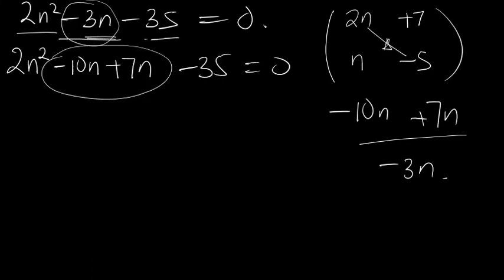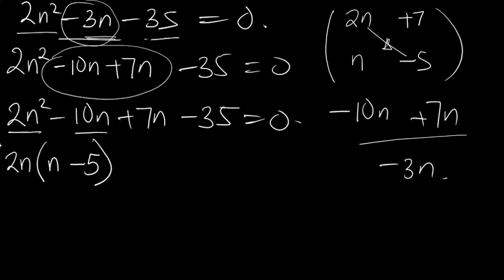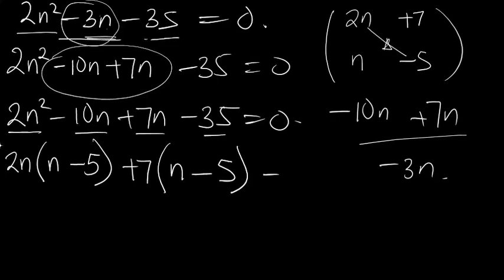So −3n can be written as −10n + 7n. We now have 2n² − 10n + 7n − 35 = 0. The common factor of the first two terms is 2n: 2n divides 2n² to give n, and 2n divides −10n to give −5. The common factor of the last two terms is 7: 7 divides 7n to give n, and 7 divides −35 to give −5.